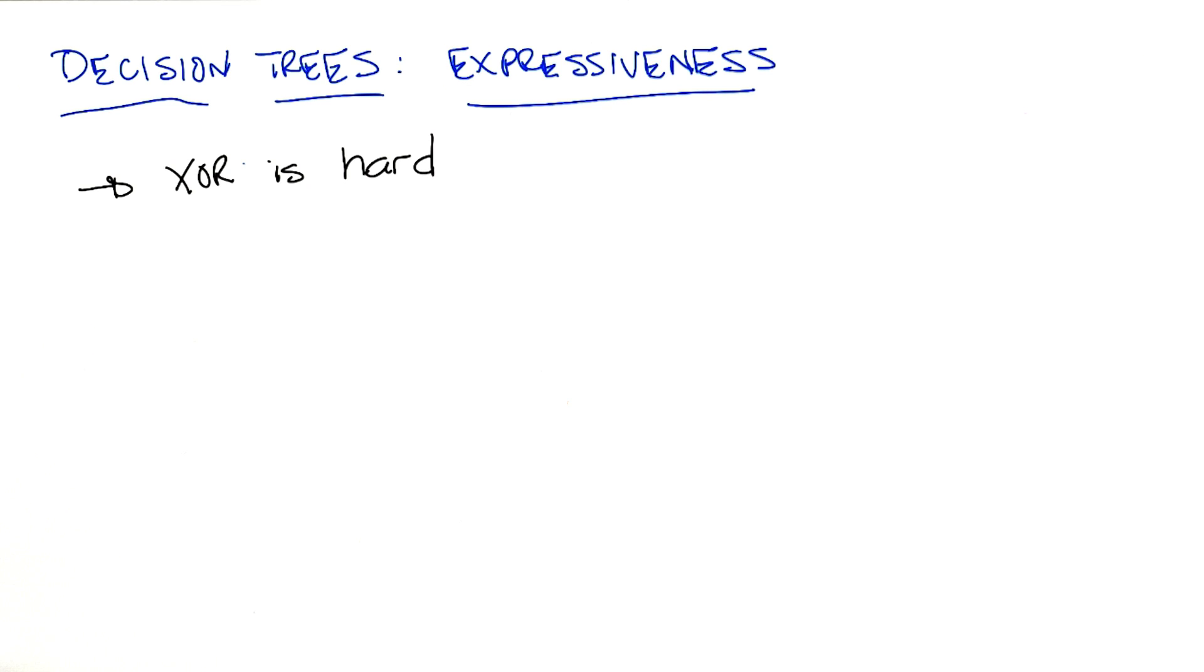So this brings me to a key question that I want to ask, which is exactly how expressive is a decision tree? And this is what I really mean by this: not just what kind of functions can it represent, but if we're going to be searching over all possible decision trees in order to find the right one, how many decision trees do we have to worry about to look at?